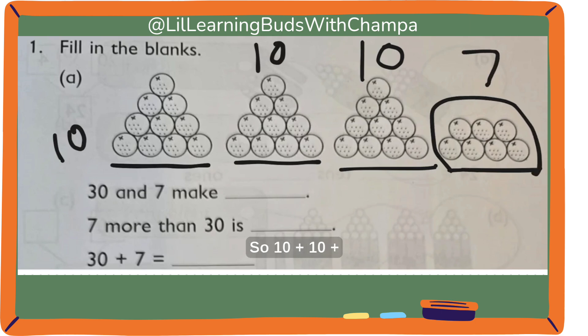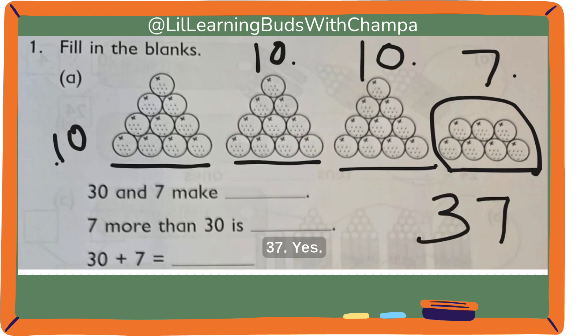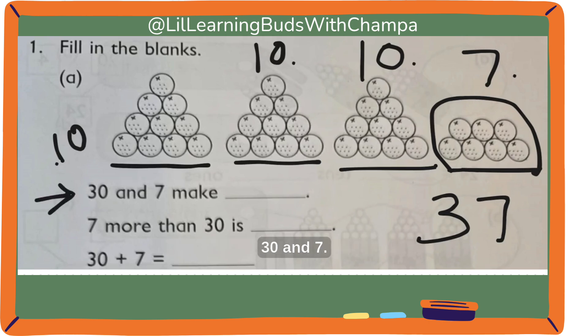So, 10, 10, 10, and 7. If you add everything, how much is that? 37, yes. So let's take this one: 30 and 7. 3 tens plus 7 makes 37.